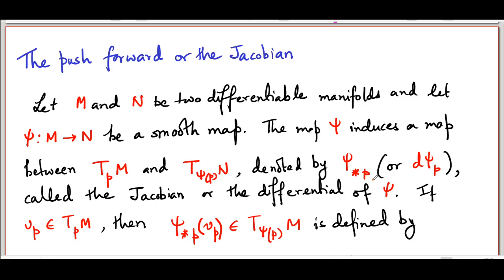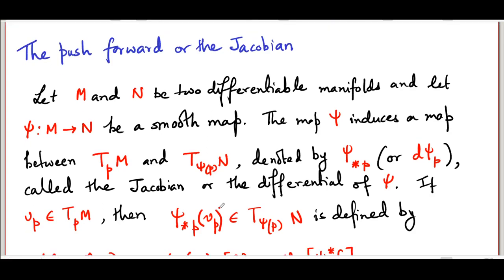Now, how is this defined? Since it's a map from T_P M to T_{shy(P)} N, its job is to take a vector V_P belonging to T_P M, and then by the action of shy-star at P on V_P, produce a member of T_{shy(P)} N. How do you define this vector shy-star_P V_P? The answer is simple — you use the pullback of functions to do this. Note that any tangent vector is defined basically as a linear functional which acts on functions to produce real numbers and has additional properties like linearity and the differential property.